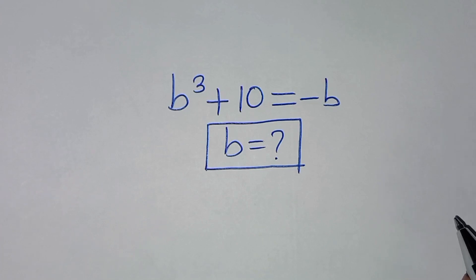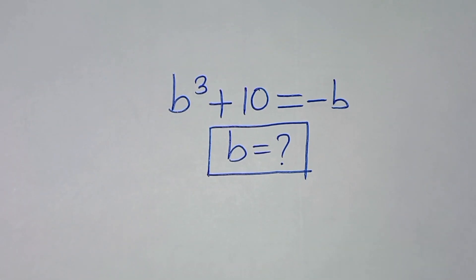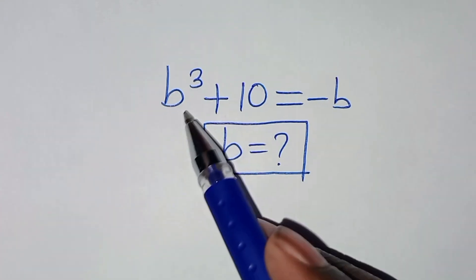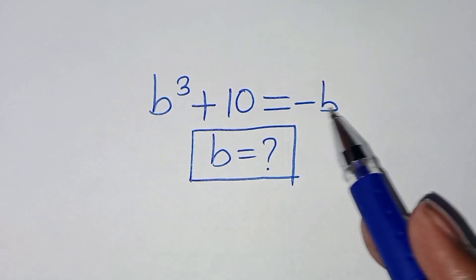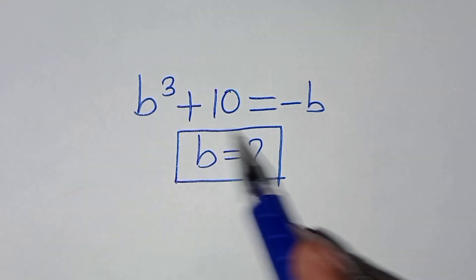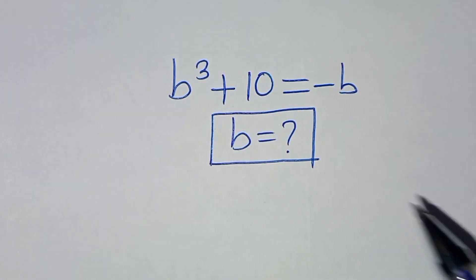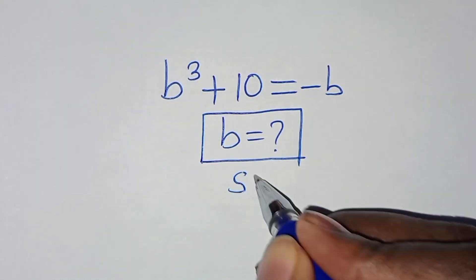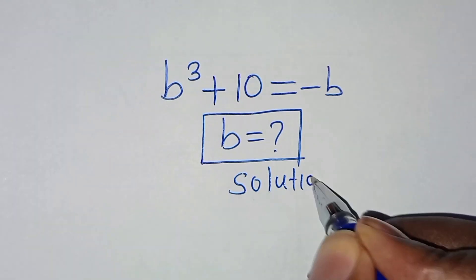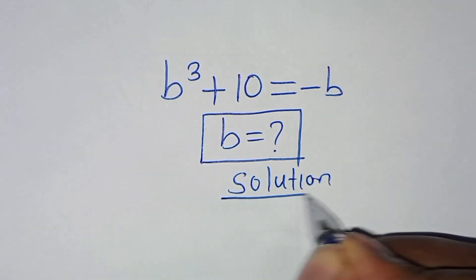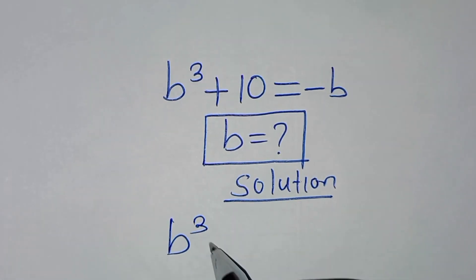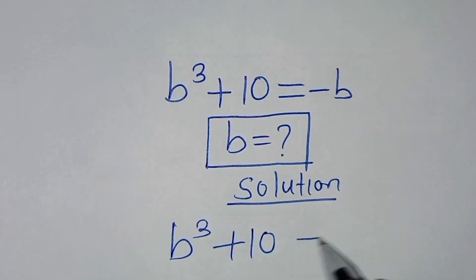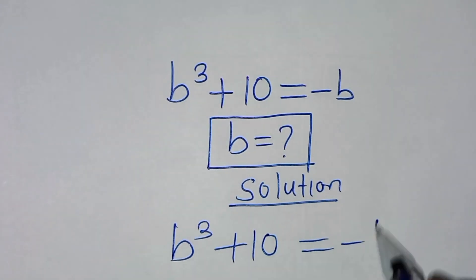Hello everyone, you are welcome to solve this nice algebra problem, which is b to the power of 3 plus 10, this is equal to minus b. So what is the value of b? Let's present a solution from here. We have b to the power of 3 plus 10, this is equal to minus b.